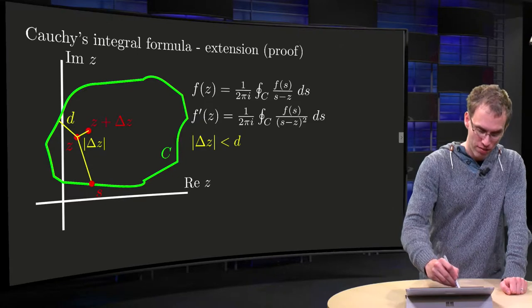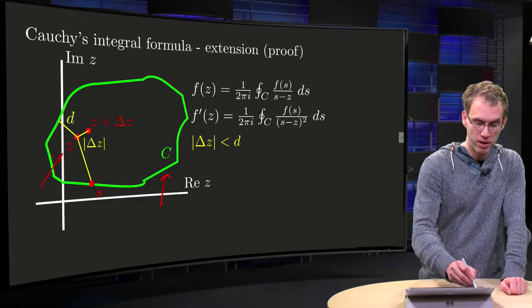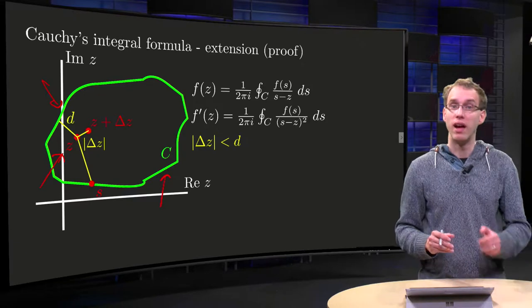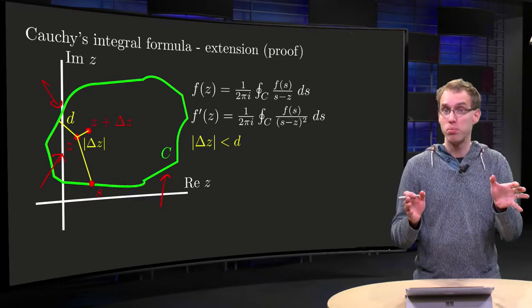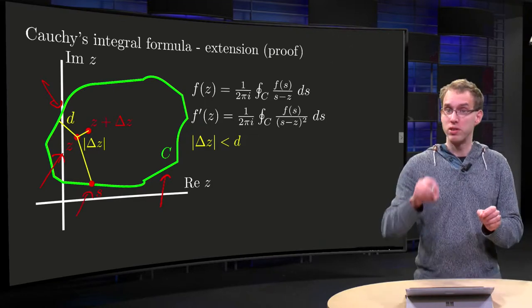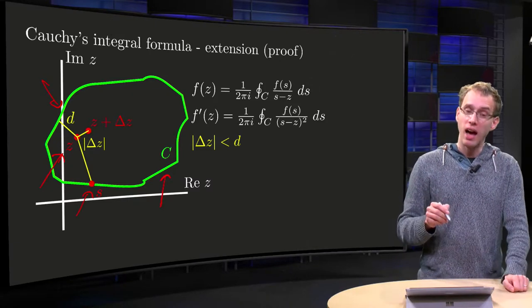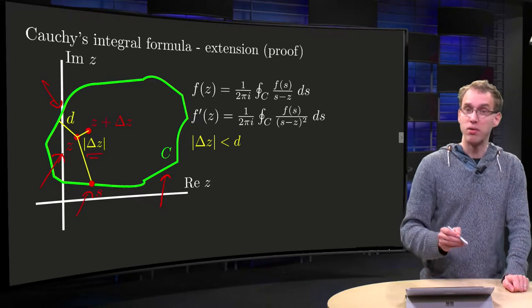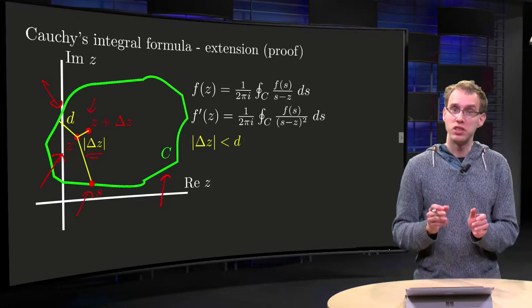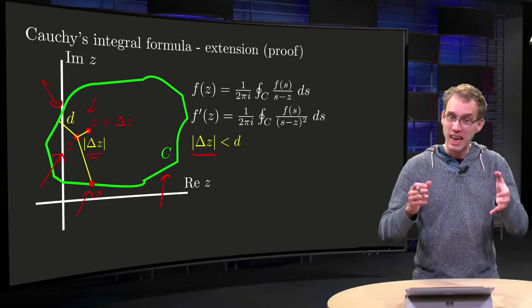So, what's the construction? We have our C closed, we have our z somewhere inside. d over here will be the distance from z to the boundary, will be some non-zero number. Because if you pick one other point on s at the boundary, this distance will be bigger than d. And then we pick our delta z, and our delta z will be really small to our point z plus delta z, such that the norm of delta z is smaller than d. So, that's the setting.